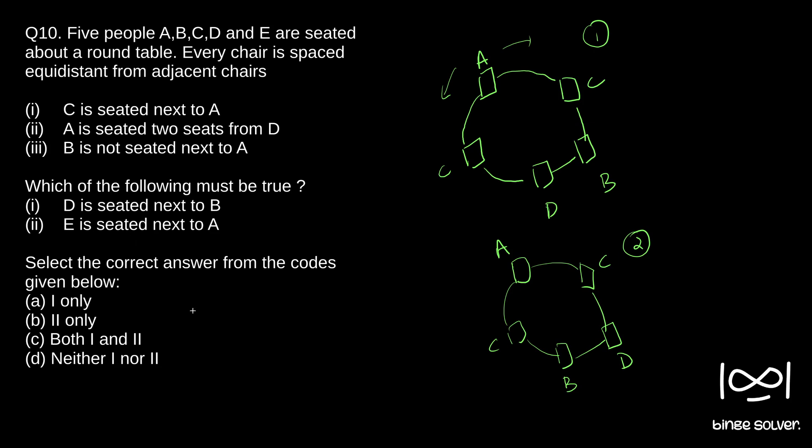And E is seated next to A. Since we haven't filled the information, E can be both here or here. So even here, E can be here or here, C or E. So in both cases, E is seated next to A. So even if C is here, E will be here. So both these statements are true in both cases.